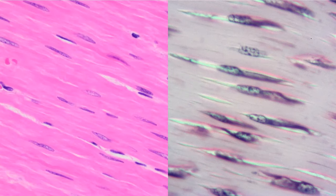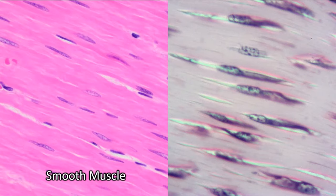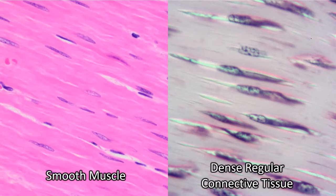On the left, we have smooth muscle, and on the right is dense regular connective tissue. At first glance, these slides might seem very similar.